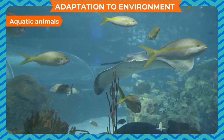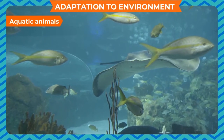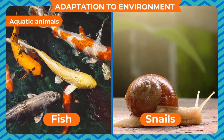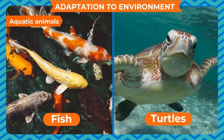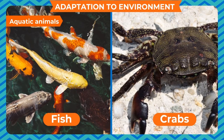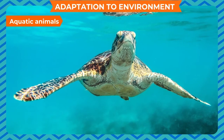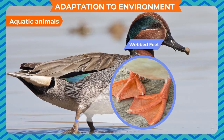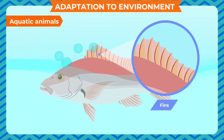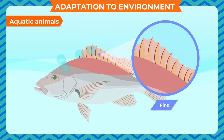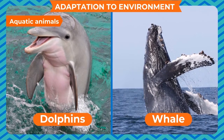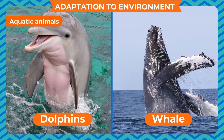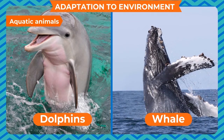Aquatic Animals. Animals that live in water are called aquatic animals. Fish, snails, crabs and turtles are aquatic animals. Their body organs are suited to live in water. Fish and crabs have gills to breathe in water. Turtles have paddle-like feet and ducks have webbed feet to swim easily in water. Fish have fins that help them to swim. Other aquatic animals such as dolphins and whales do not have gills to breathe in water. They come up to the surface of water and breathe through their lungs.